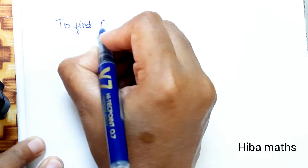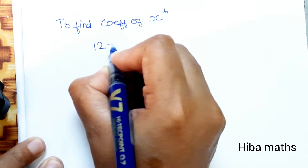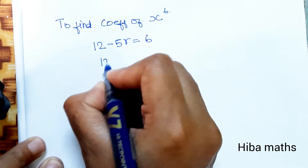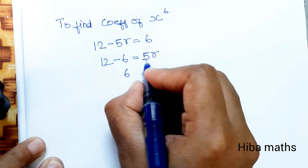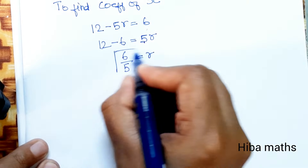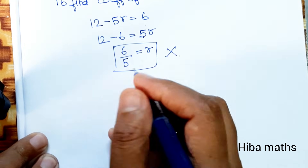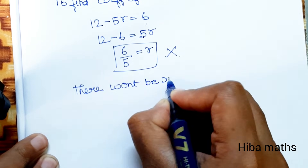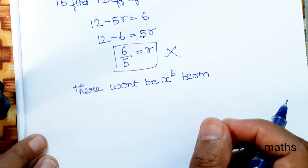To find the coefficient of x⁶, set 12 - 5r = 6, so 5r = 12 - 6 = 6, giving r = 6/5. Since r is a fraction and not a whole number, this term is not possible. Therefore, there is no term containing x⁶ in this expansion. Thank you so much for watching.